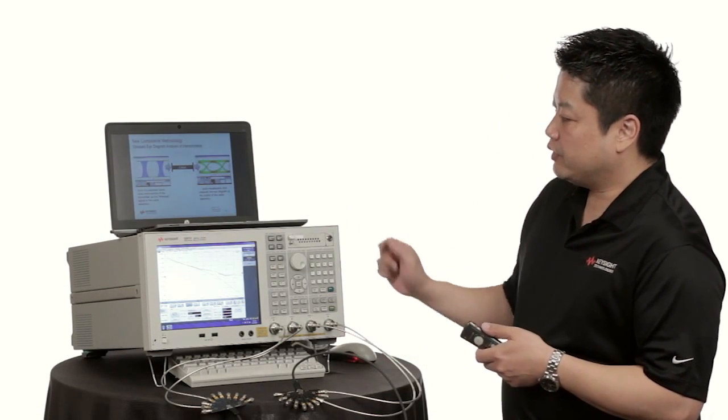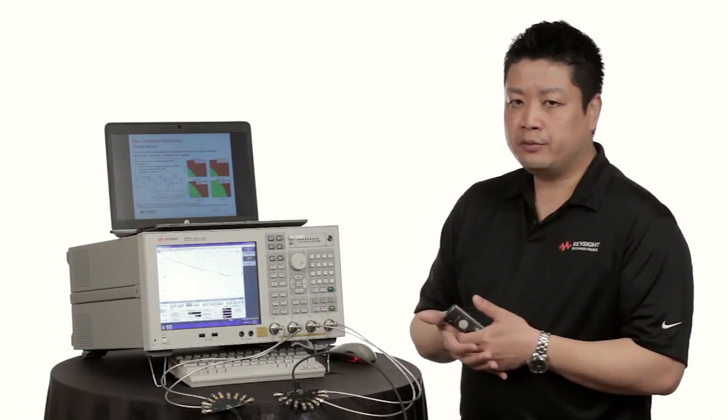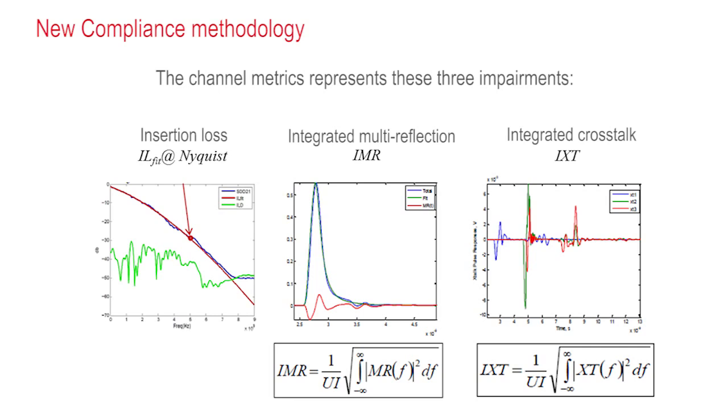For USB 3.1, their implementation of stressed eye diagram testing is based on the channel metrics and the USB IF will provide a tool which does the calculations of the eye diagrams based on the S-parameters inputted into the tool.